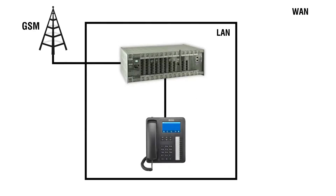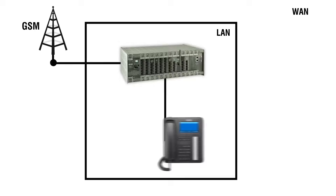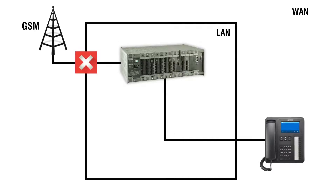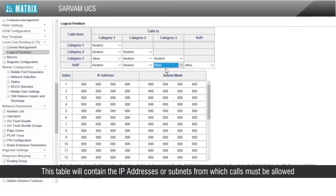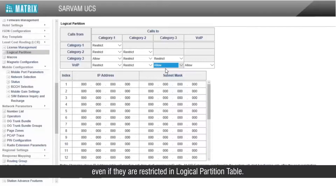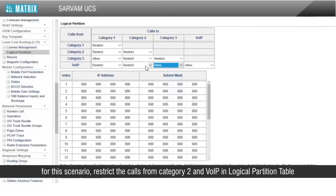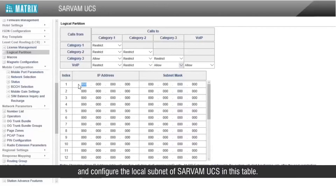Further, consider a scenario where there are IP phones registered with Servum UCS, and calls must get through the GSM trunk only when the phone and Servum UCS are within the same network. This table contains the IP addresses or subnets from which calls must be allowed even if they are restricted in the logical partition table. For this scenario, restrict the calls from category 2 and VoIP in the logical partition table and configure the local subnet of Servum UCS in this table.